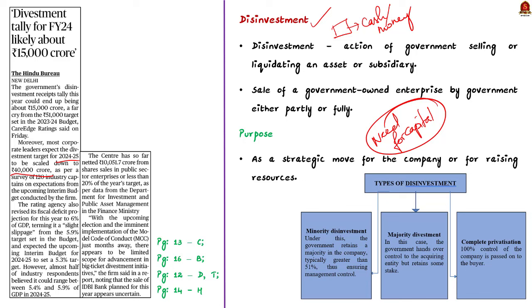Depending upon the approaches to disinvestment, it can be classified into three major types: minority disinvestment, majority disinvestment, and complete privatization. Minority disinvestment happens when the government tries to preserve the majority stake — around 51% — selling only the minority stake while retaining management control. In majority disinvestment, the government gives up the majority stake. In privatization, the company's entire ownership is transferred to a buyer, and 100% control is passed to the buyer.